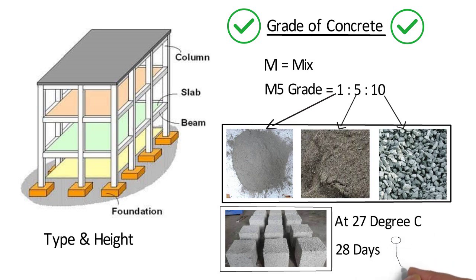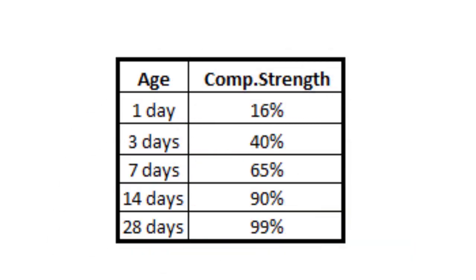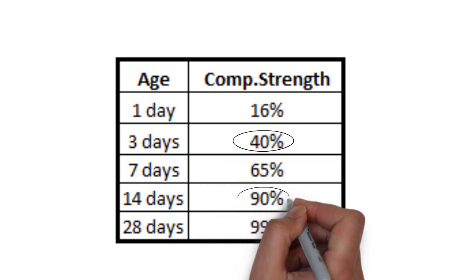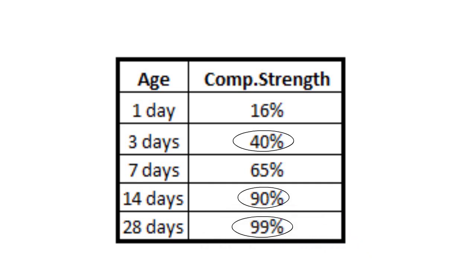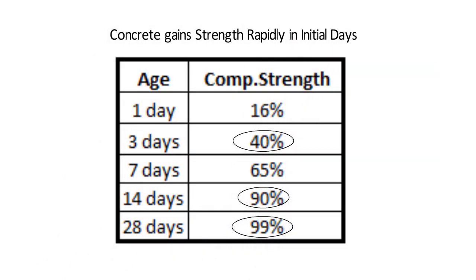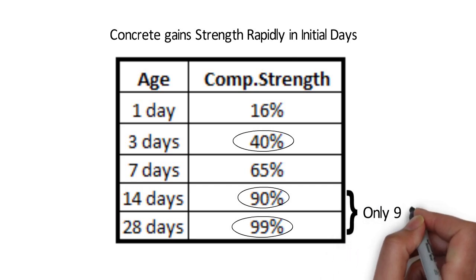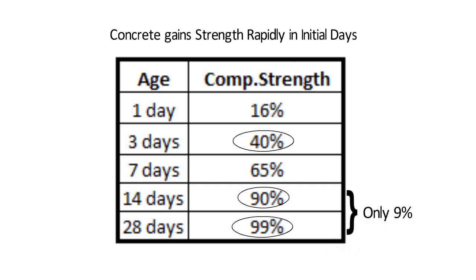Now the question is, why 28 days? Why not 20 or 40? This table shows the compressive strength of concrete with its age. Concrete achieves 40% strength in 3 days, 90% in 14 days, and 99% strength in 28 days. Concrete gains strength rapidly in the initial days — 90% in only 14 days — and after that, concrete gains only 9% strength in the next 14 days. So the rate of gain of strength decreases. Since concrete gains 99% strength in 28 days, it's almost close to its final strength, and that's why we use this strength as the base for our design and evaluation.